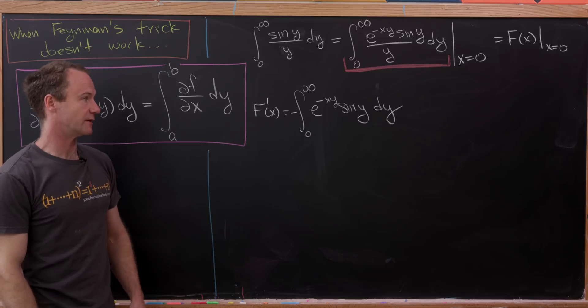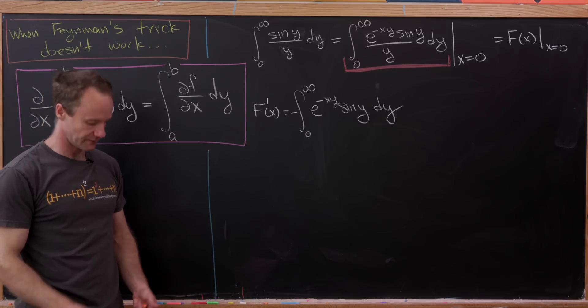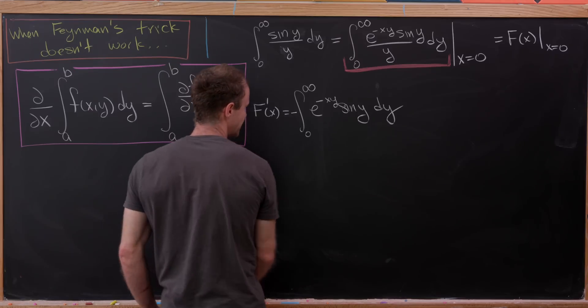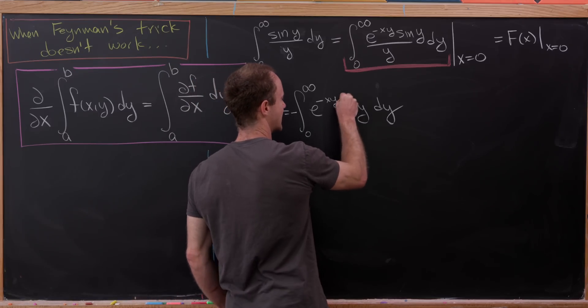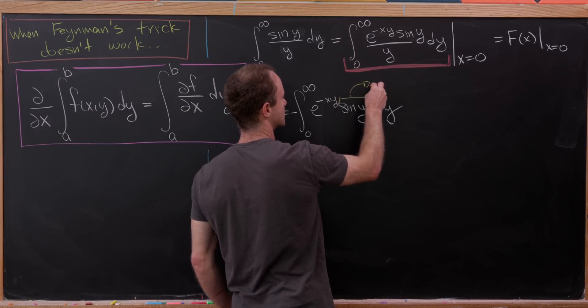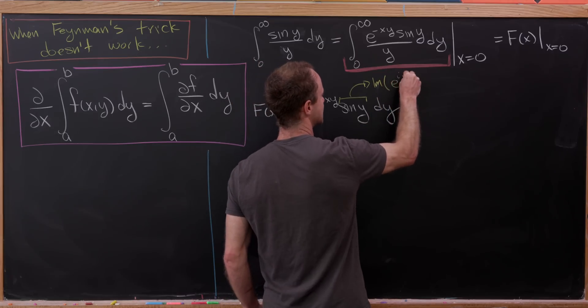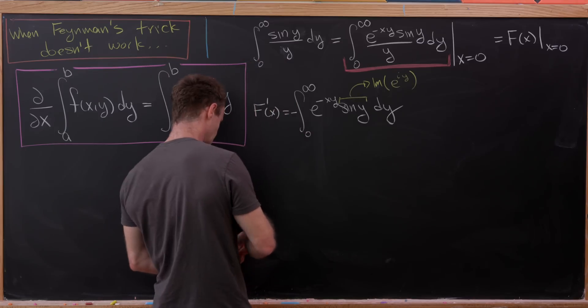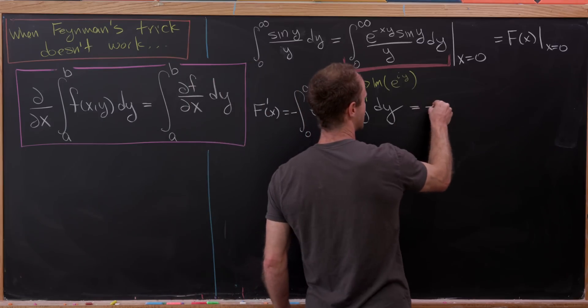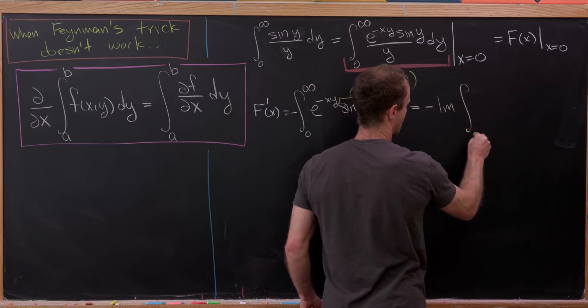Now we could evaluate that, and it's not so hard to evaluate. Perhaps one nice way is to take this sine function and write it as the imaginary part of e to the iy. That means in the end, we have minus the imaginary part, the integral from zero to infinity.